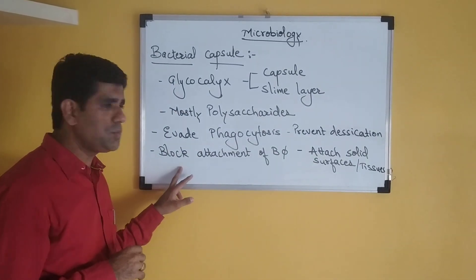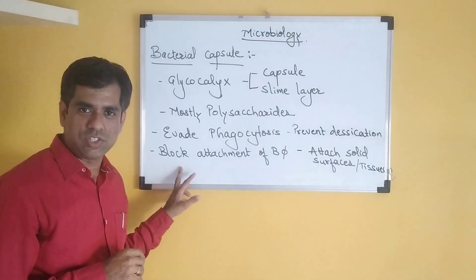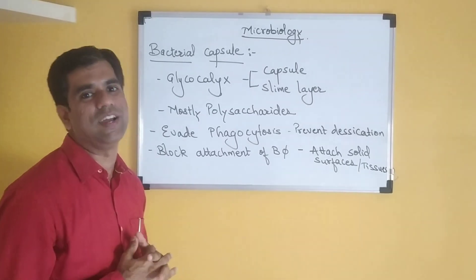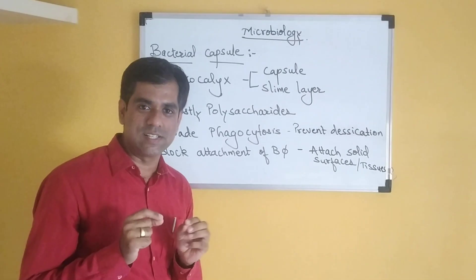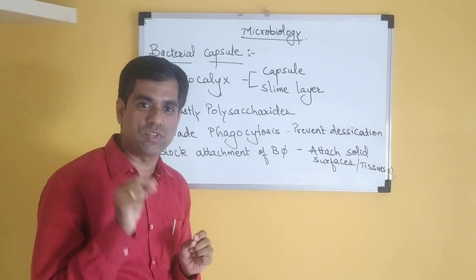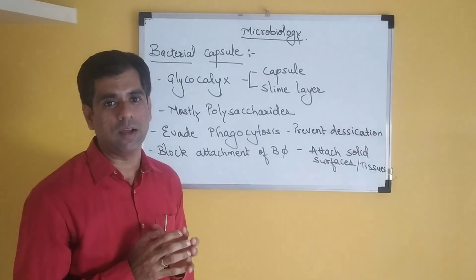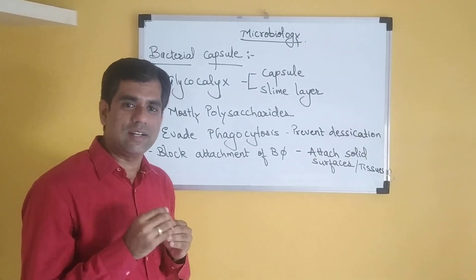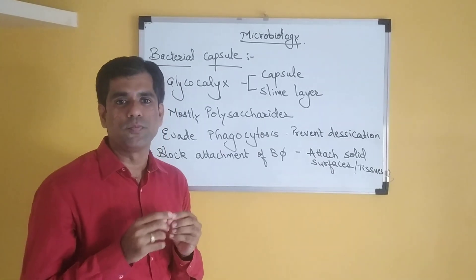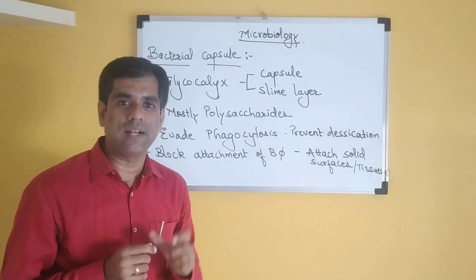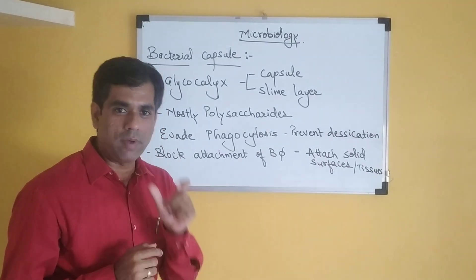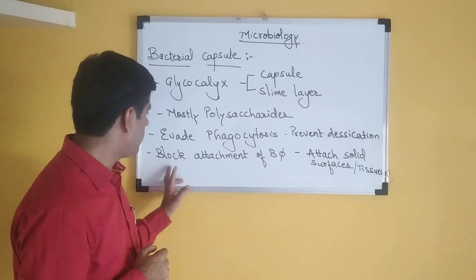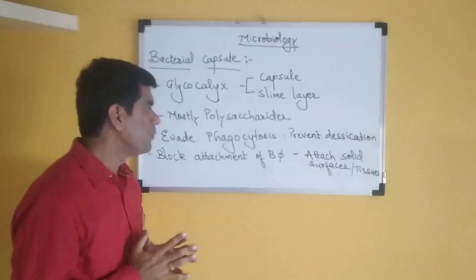The capsule also prevents the attachment of bacteriophages. Just as we have enemies in our lives, bacteria also have enemies. Bacteriophages are viruses which infect bacteria. The capsule covering is known to prevent the attachment of bacteriophages on the bacterial cell. So a bacterial cell which has a capsule is protected from attachment of these bacteriophages.